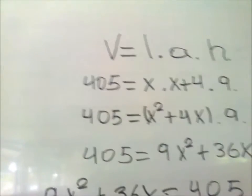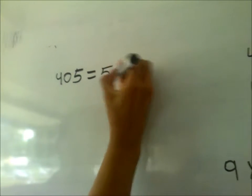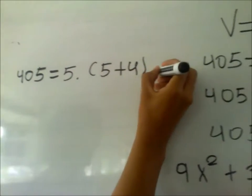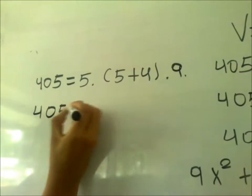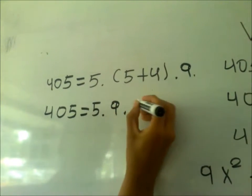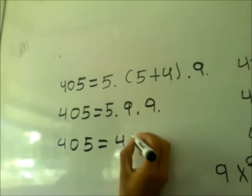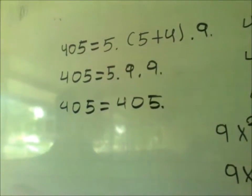Once we have the value, we proceed to verify in the original equation. We have that 405 equals 5 times 5 plus 4 times 9, which gives 405 equals 5 times 9 times 9, which equals 405, giving us equality and confirming the value is totally verified.